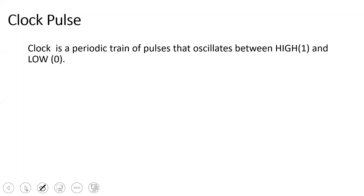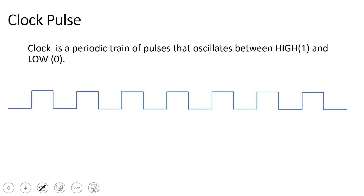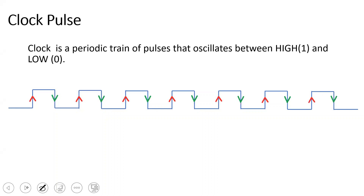First, what is the clock pulse? Clock is a periodic train of pulses that oscillates between high and low states — one high state or high level, or low level. In digital electronics, low is 0 and high is 1. Analogously, low is 0V and high is 5V.